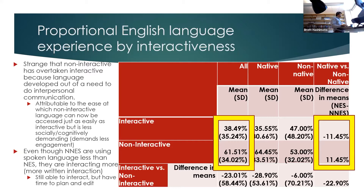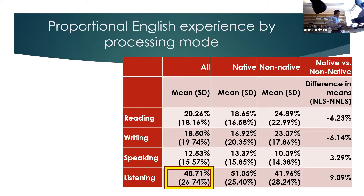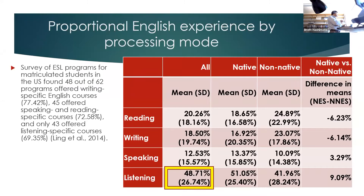When we break down the results by processing mode — reading, writing, speaking, and listening — it's interesting that listening makes up almost 49%, so nearly half of the language these university students were using was listening. I thought listening was the most used skill, but I didn't presume it was by these margins.